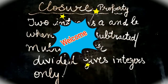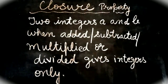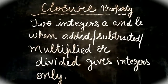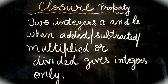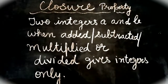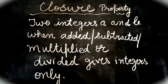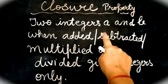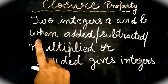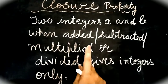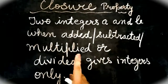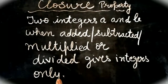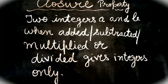Hello everyone, welcome back to MathWives. Today in this video we are going to learn about closure property of integers. Closure property of integers states that two integers A and B, whether they are added, subtracted, multiplied or divided, they will give you integers as the answer only.